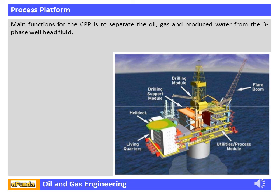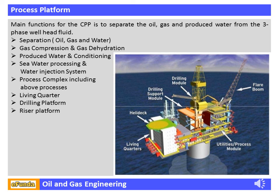The processes involved on a process platform are separation of oil, gas, and water; gas compression; and gas dehydration. Produced water conditioning, seawater processing, and water injection system are also included. The process complex includes the above processes as well as living quarters, drilling platform, and riser platform.